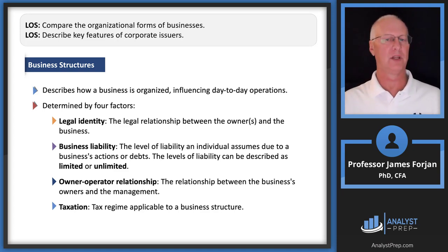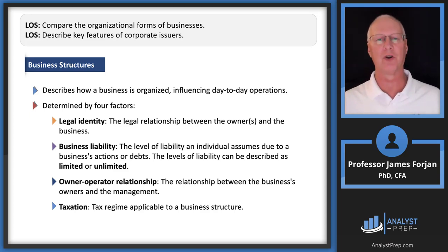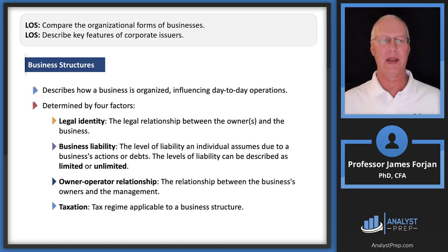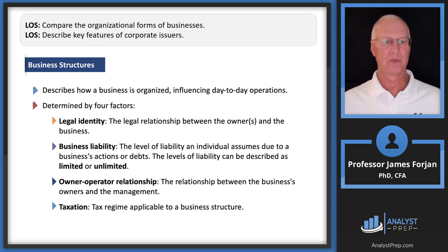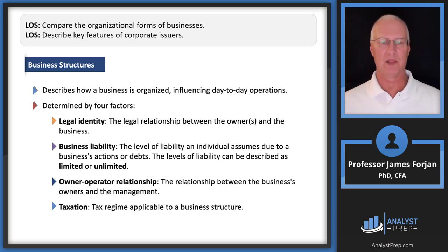There are four factors that determine a business structure. The first is legal identity — here in the United States, corporations and businesses are required to have some kind of a charter, which they file with individual states. Part of that involves what happens on the right-hand side of the balance sheet: who is liable for the business's activities and its debts. Business liability could be limited or unlimited — that's a key differentiating factor. At the bottom right-hand side of the balance sheet we have the ownership, which is called the equity of a business.